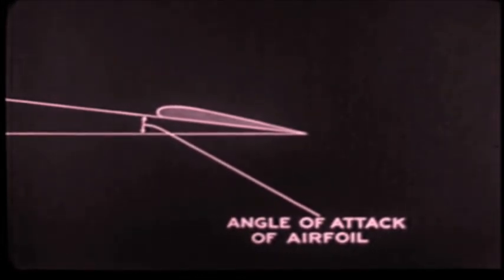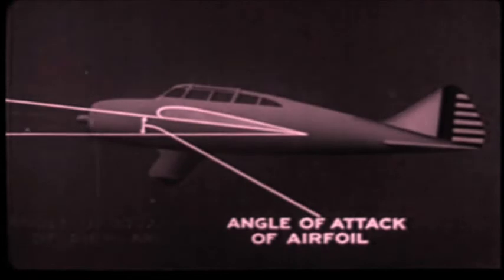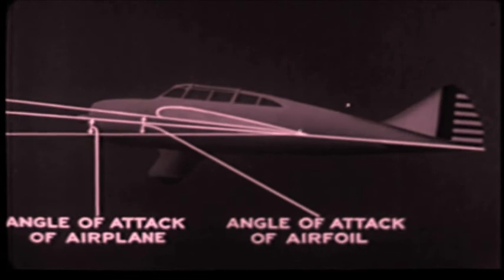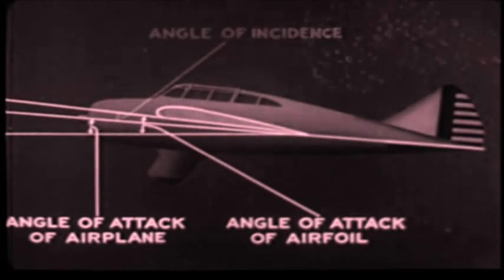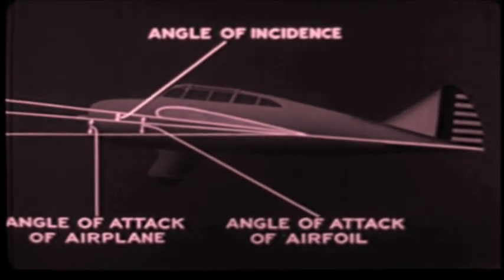The angle of attack of an airfoil was shown to be the acute angle between the cord of the airfoil and the relative wind. The angle of attack of the airplane as a whole is the acute angle between the longitudinal axis of the airplane and the relative wind. The difference between these two angles is constant for any given airplane and is called the angle of incidence.